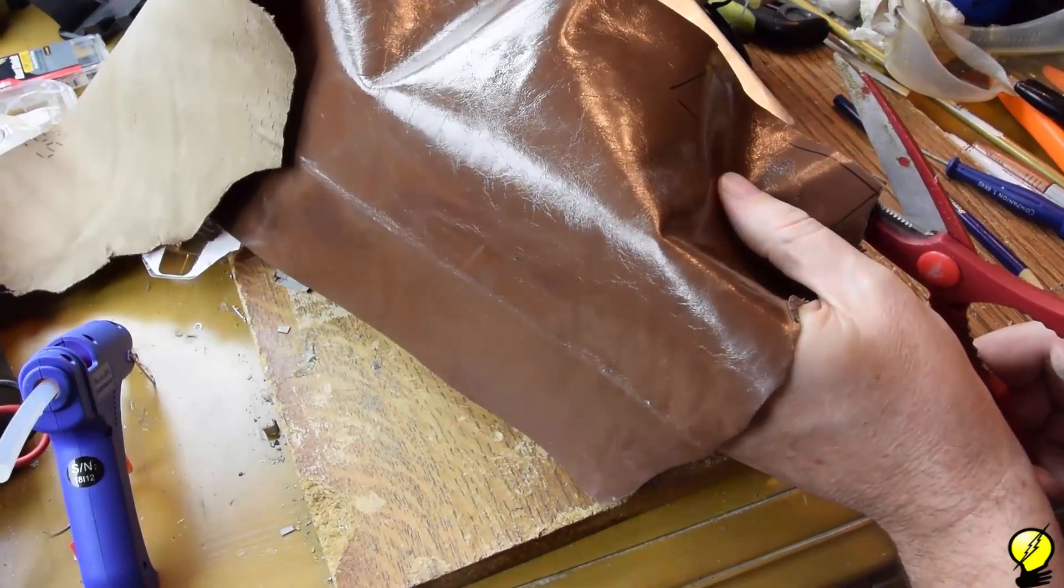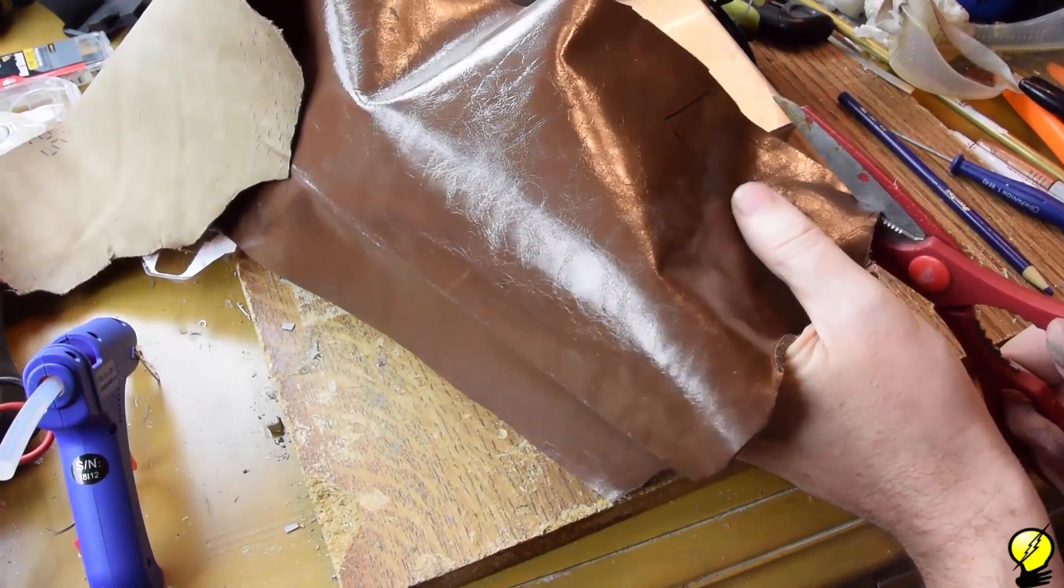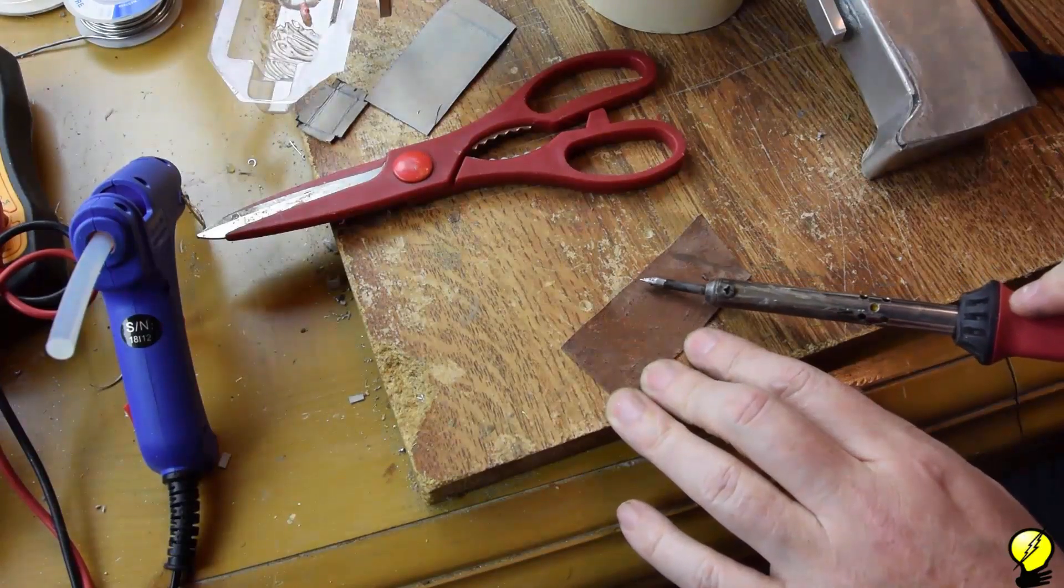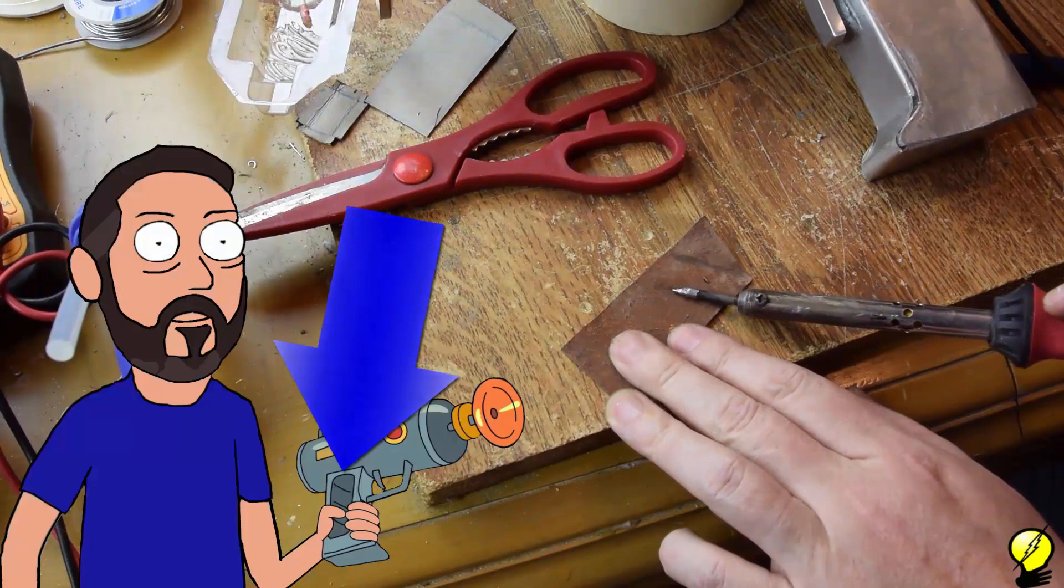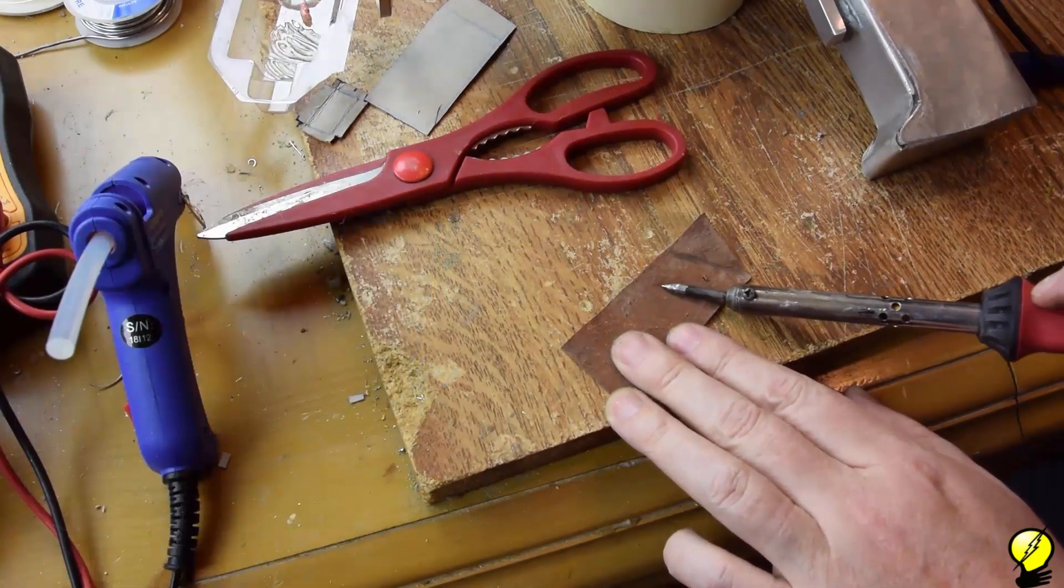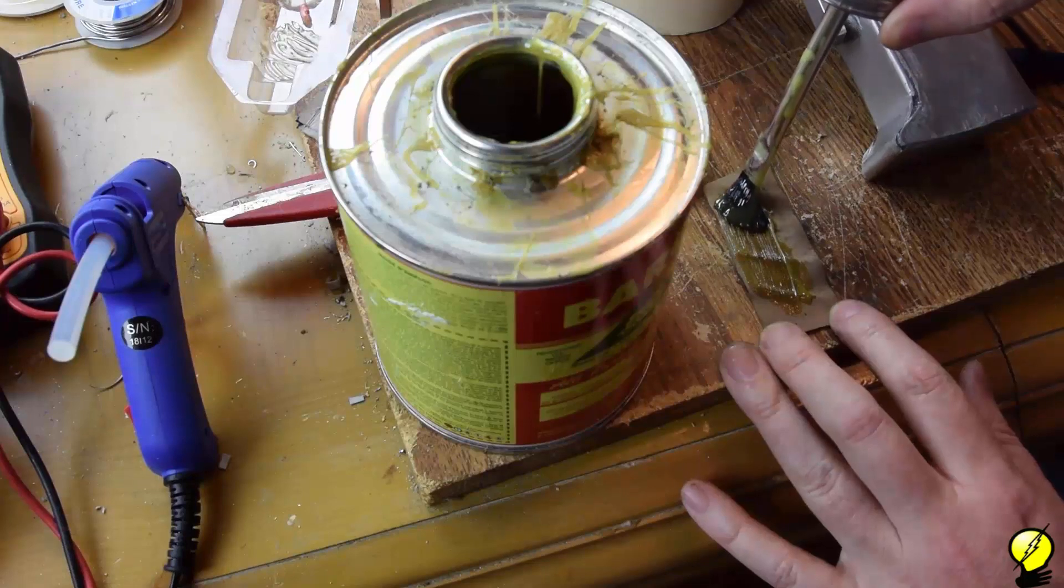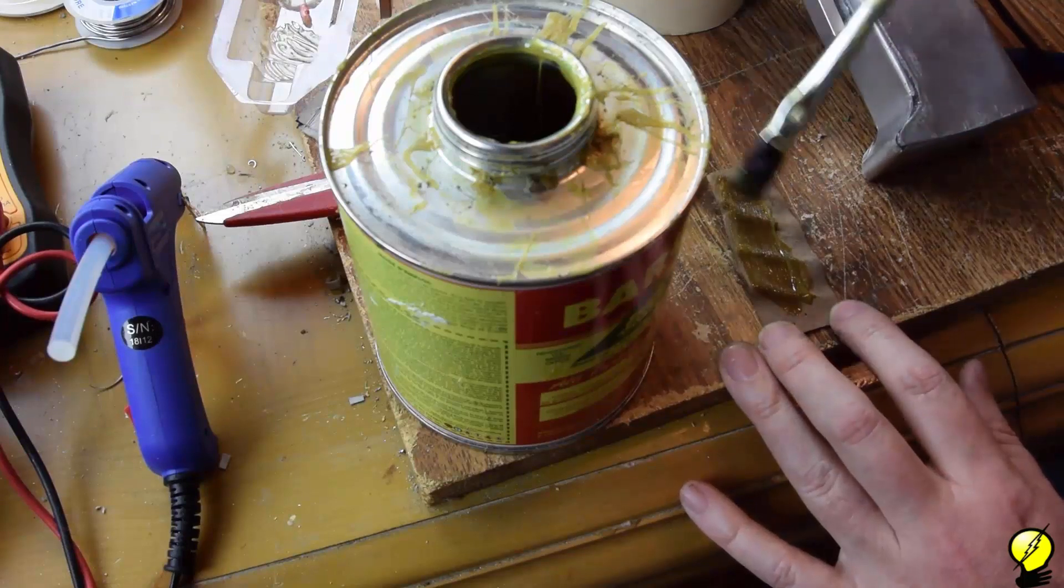For the grips, I'm using leather from Hobby Lobby. Cut the shape to match and then use a soldering iron to create the grooving pattern. Glue the leather to the handle.